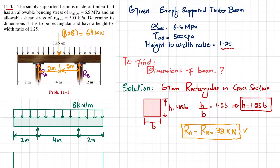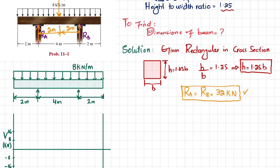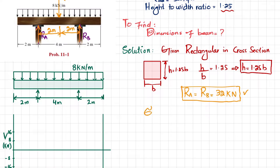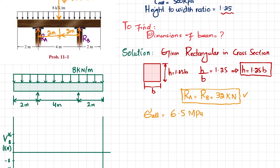Moving further, the allowable bending stress is 6.5 megapascal. The bending stress formula is: allowable stress equals maximum bending moment times c divided by I. Since we do not yet know the maximum bending moment, we will draw the shear force and bending moment diagrams.